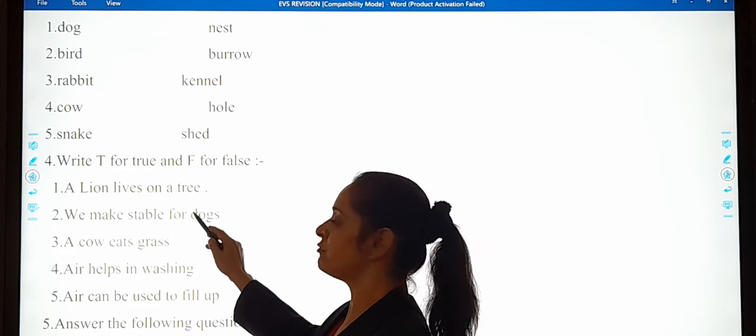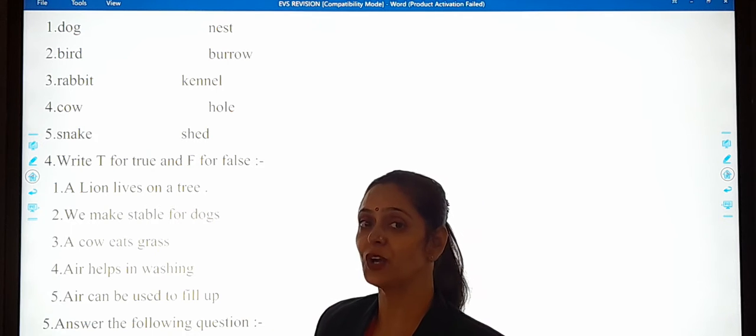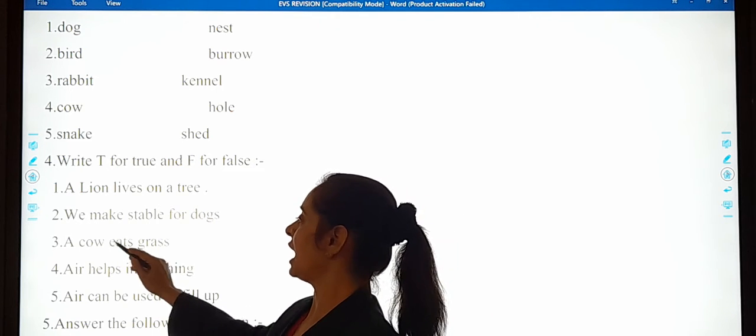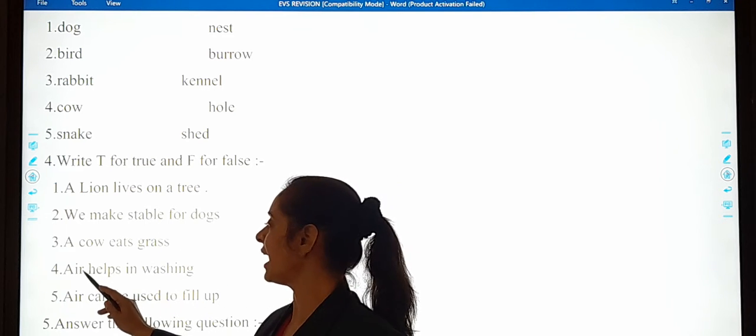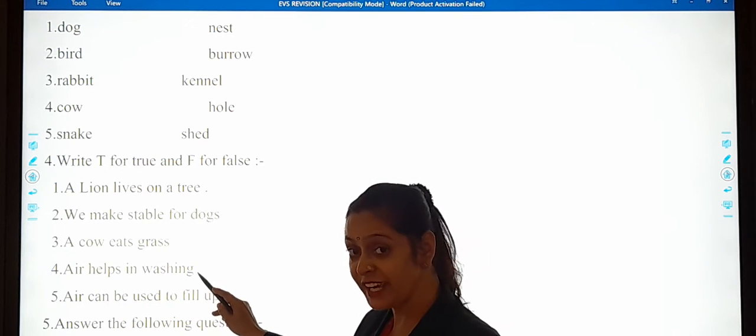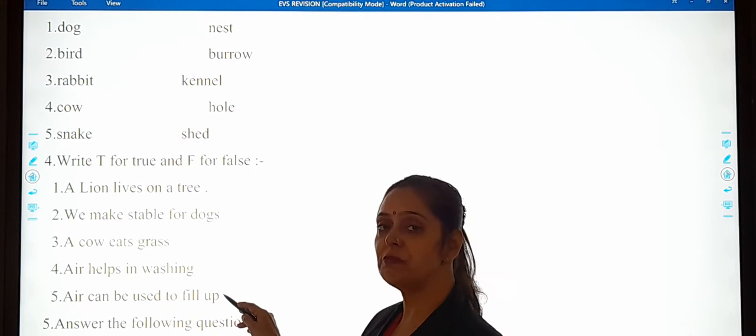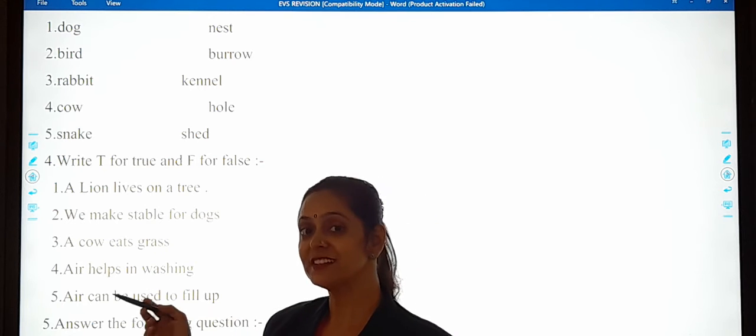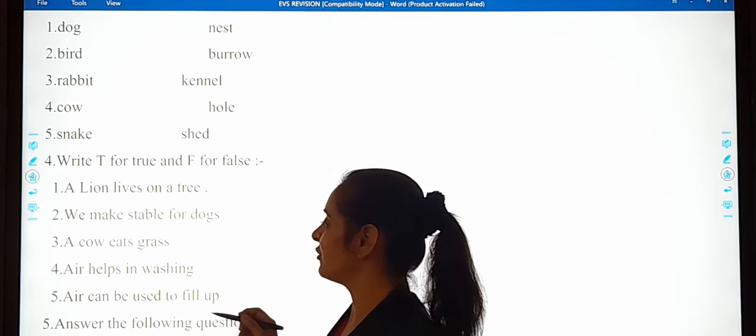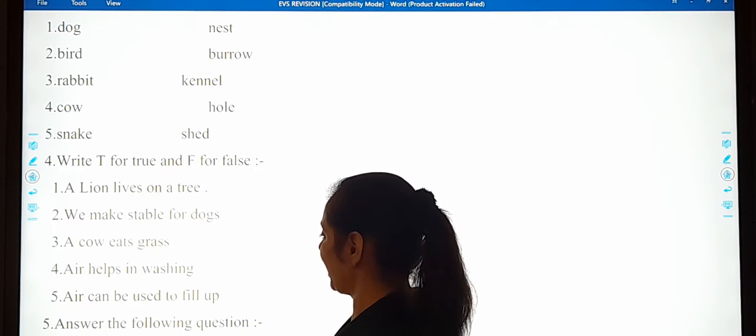We make stable for dogs. I'll be reading and you have to do on your own. A cow eats grass. Fourth one is, air helps in washing. Fifth is, air can be used to fill up. True, false. Tell me, tell me. You know very well. We have gone through the video as well as the whole chapter also.